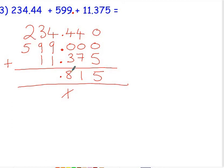3 add 9 is 12, add 1, and the one we carried is 13, and the one we carried is 14, 4 down, carry 1. 2 add 5 is 7, and the one we carried is 8. So our answer is 844.815.